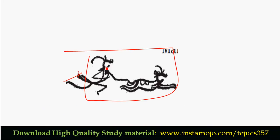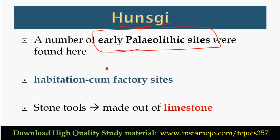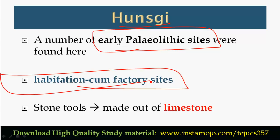The Paleolithic period ranges from 2 million years ago to about 12,000 years ago. Early Paleolithic sites such as Hansa Key include both habitation and factory sites.